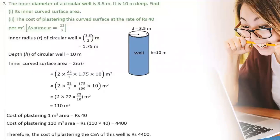Now we need to find the cost of plastering the curved surface area at a rate of rupees 40 per meter square. So 1 meter square costs rupees 40. So 110 meter square costs 110 × 40 = rupees 4,400. Therefore the cost of plastering the curved surface area of the well is rupees 4,400.